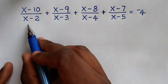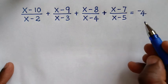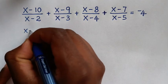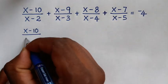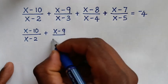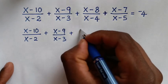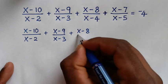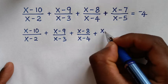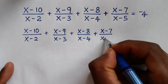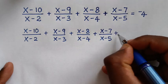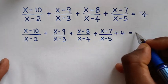To find the values of x from this equation, in the first step we will take this negative 4 to the left side. So it will be x minus 10 over x minus 2, plus x minus 9 over x minus 3, plus x minus 8 over x minus 4, plus x minus 7 over x minus 5, plus 4, is equal to 0.